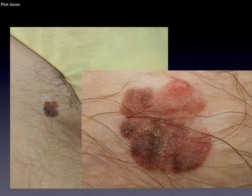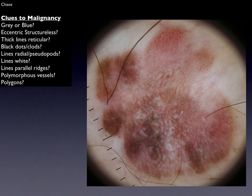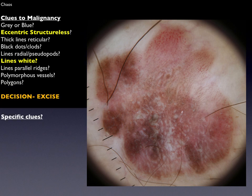Here we have a pink lesion on the groin of a 70-year-old lady, and we cannot recognize this as one of the five common benign lesions. Because it's pigmented we apply chaos and clues. This lesion is chaotic and asymmetrical: there is chaos of pattern because there's a dot pattern upper right and the rest is structureless with no basic structure predominating; chaos of color because the colors on one side differ from the other side; and chaos of border abruptness because some of the border is abrupt and other parts are gradual. As for clues to malignancy, there is an eccentric structureless area in the lower left as well as the clue of white lines. We make the decision to excise.